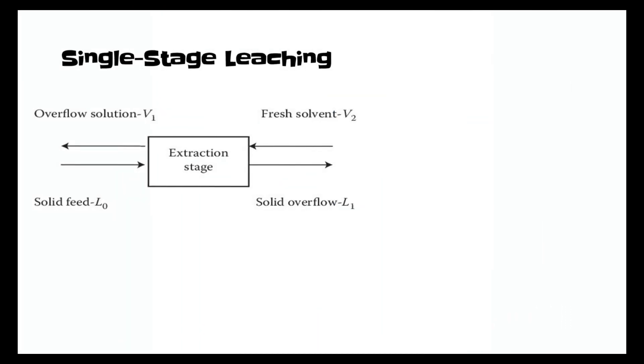Now let's look into the extraction system operations. This is a single-stage leaching process. We can see that there are two inlet and two outlet streams in this system where the solid feed and the fresh solvent come into contact counter-currently. This can increase the extraction efficiency as it can increase the contact time between solvent and solids.